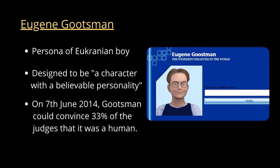Another recent example of a bot passing the Turing test was Eugene Goostman. This chatbot pretended to be a Ukrainian child for whom English wasn't the first language. Goostman was designed to be a character with a believable personality, which helped cover up any slips that may occur during its conversations.